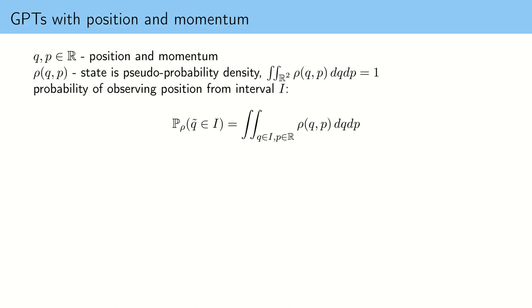To construct GPTs with position and momentum we first introduce position q and momentum p as real numbers. The state of our theory will be given by pseudo probability densities — that means functions of position and momentum. These functions can be negative, but if we integrate them over all positions and momenta we should get one, which is just a normalization condition.